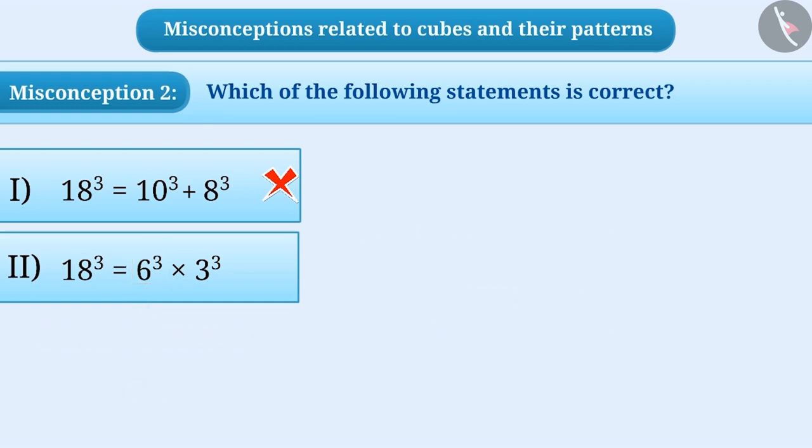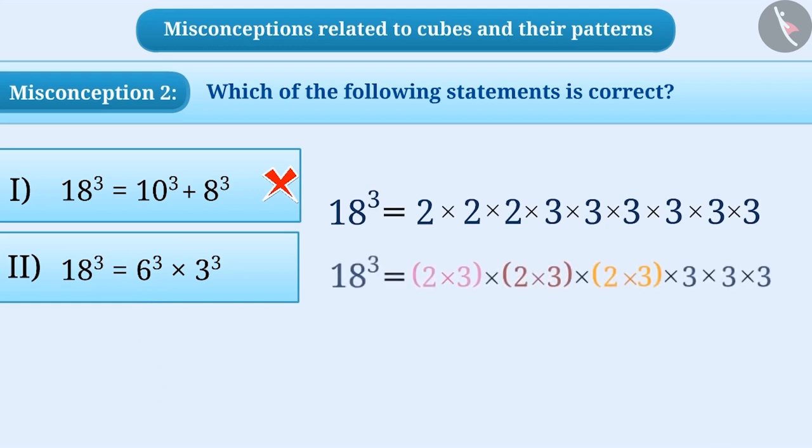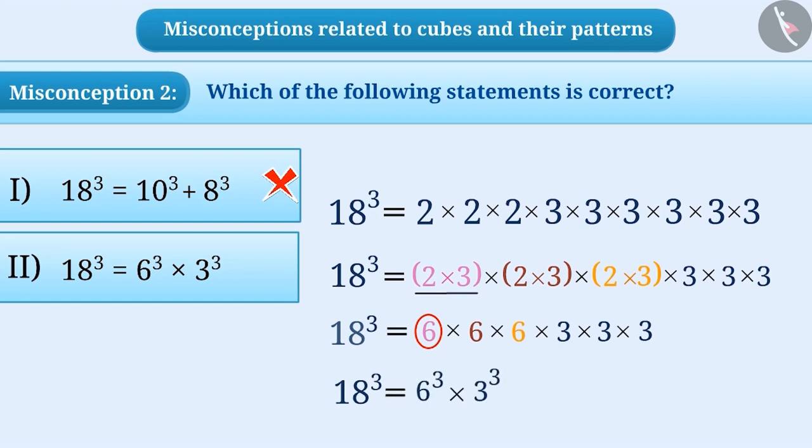Remember, we can write 18 to the power of 3 as follows. We can further factorize it using groups of 2 multiplied by 3. Since 2 multiplied by 3 is equal to 6, we can write it as 6 to the power of 3 multiplied by 3 to the power of 3. So now you must have understood that the second statement is correct and it is the correct answer to the given question.